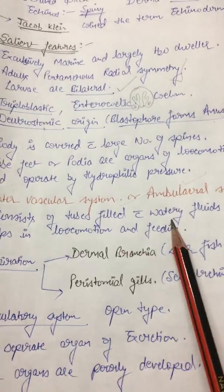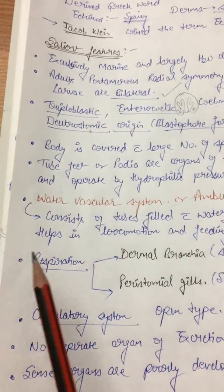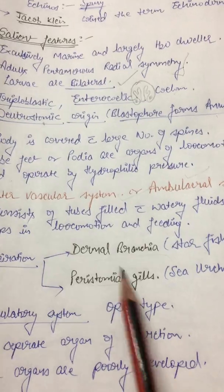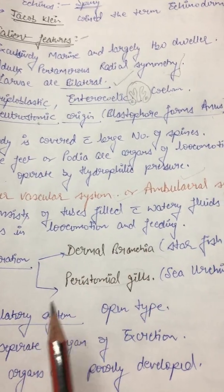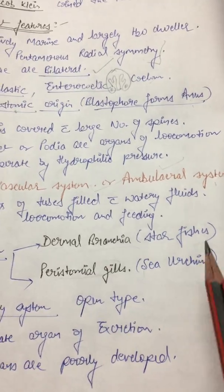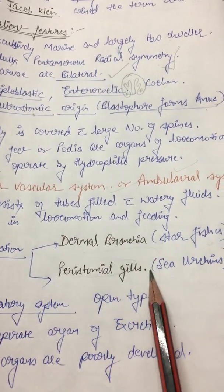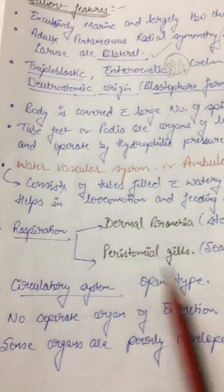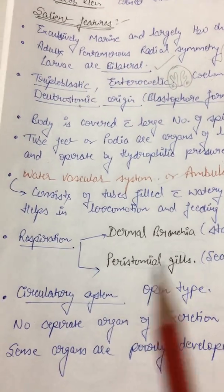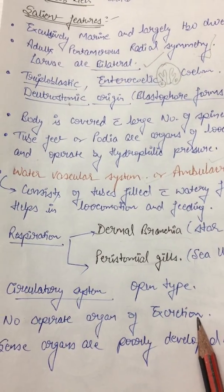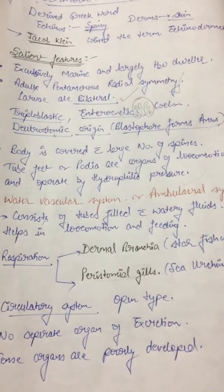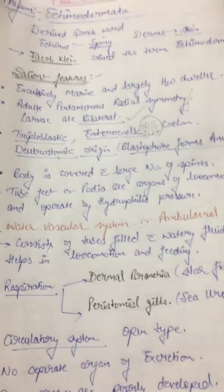The water vascular system helps in locomotion and feeding. For respiration they have two organs: one is dermal branchia and another is peristomal gills. Dermal branchia is found in starfishes, whereas peristomal gills are found in sea urchins. The circulatory system is open type. There is no separate organ of excretion, and sense organs are poorly developed.